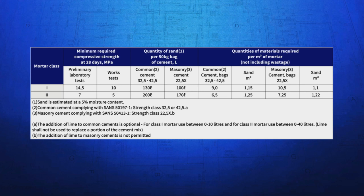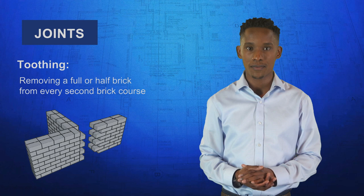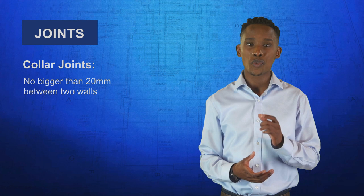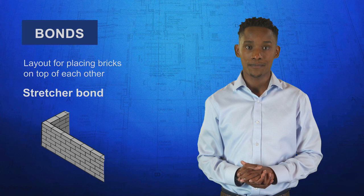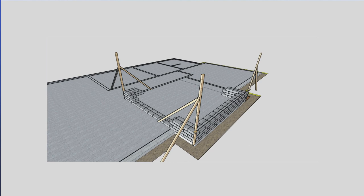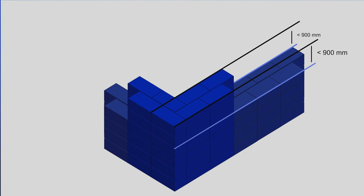There are different types of bonds and joints in brick laying. Toothing refers to removing a full or half brick from every second brick course, as shown in this image. Collar joints are a joint no bigger than 20 millimeters between two walls to form a double brick wall. A bond is a type of layout for placing bricks on top of each other; the most common is stretcher bond. English bond is less common, with one layer using bricks laid long ways and the next layer with bricks laid width ways. When beginning the superstructure brickwork, build up corners first. As the corners are built up, the height of the corner must not be more than 900 millimeters higher than any part of the wall, to avoid unequal settlement.